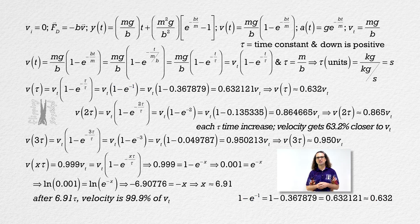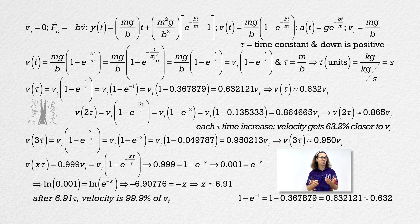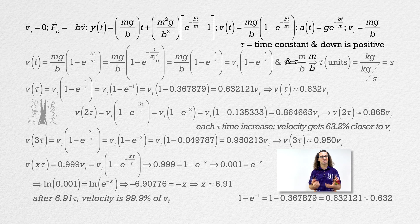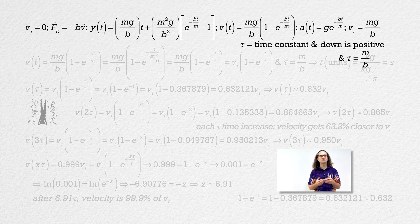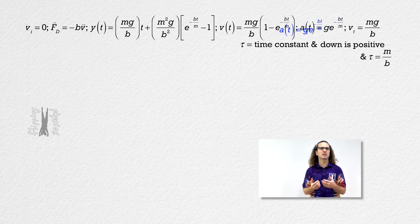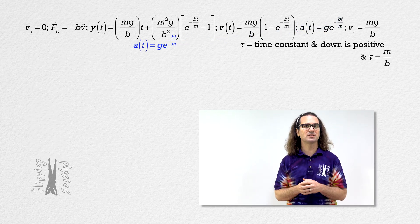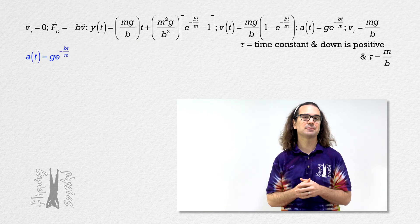One more thing about the time constant. It is a way for us to quantifiably compare the time it takes different objects to reach terminal velocity. For example, a feather is going to have a very small time constant whereas a hammer would have a much larger time constant. Let's discuss what the time constant means for acceleration. Billy, please look at the acceleration equation and plug in one time constant for time to see what happens.